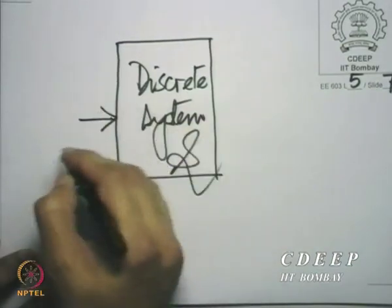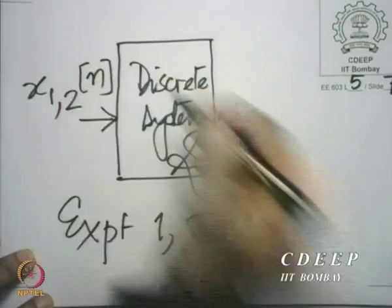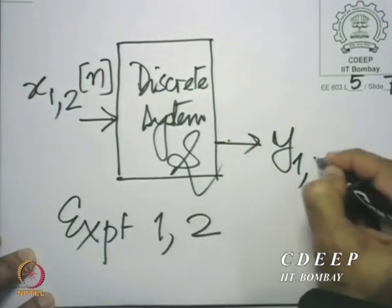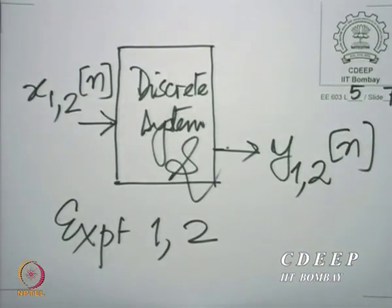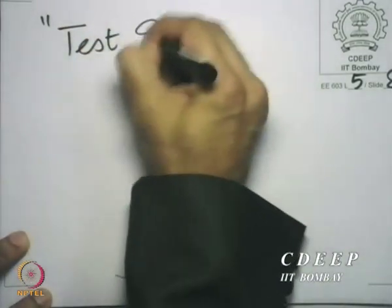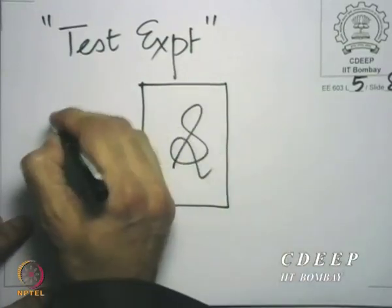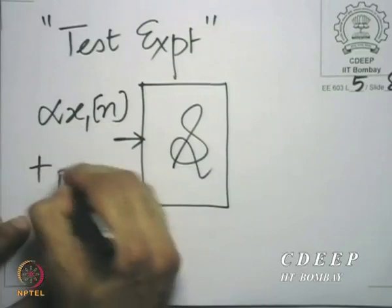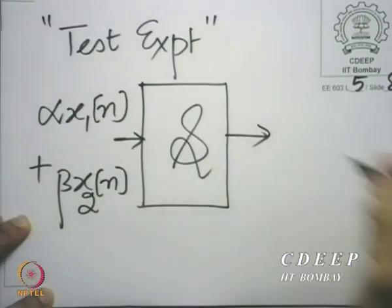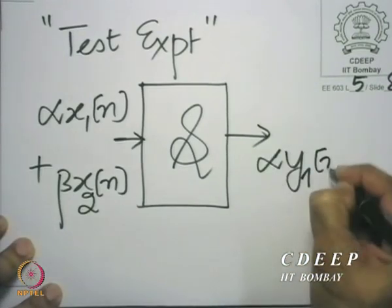I apply to it, in two different experiments — experiment 1 and 2 — the inputs x1[n] and x2[n], and observe the corresponding outputs y1[n] and y2[n]. I am using multiple-concept notation here to condense my drawings. The test experiment is to take the same system, give it alpha·x1[n] plus beta·x2[n], and ask what the output is. If the output is also alpha·y1[n] plus beta·y2[n], the principle of superposition is satisfied.